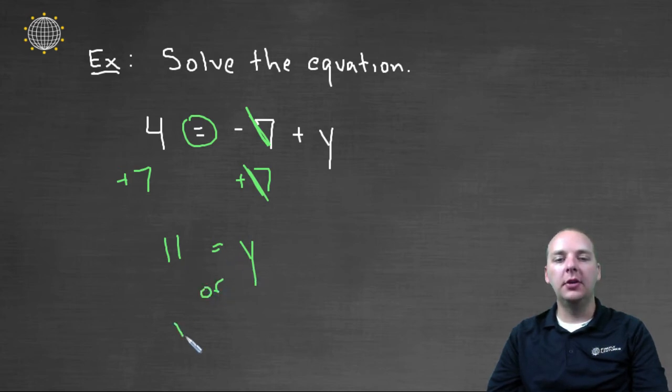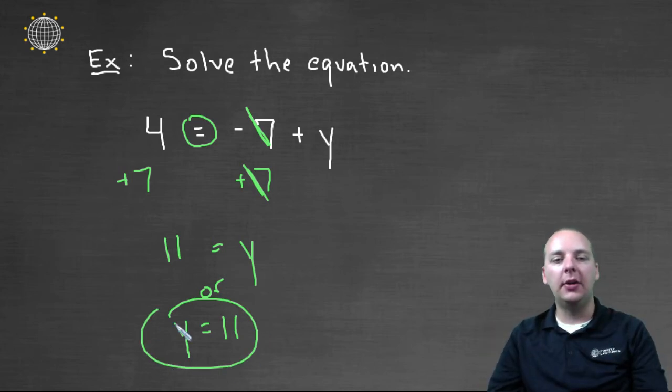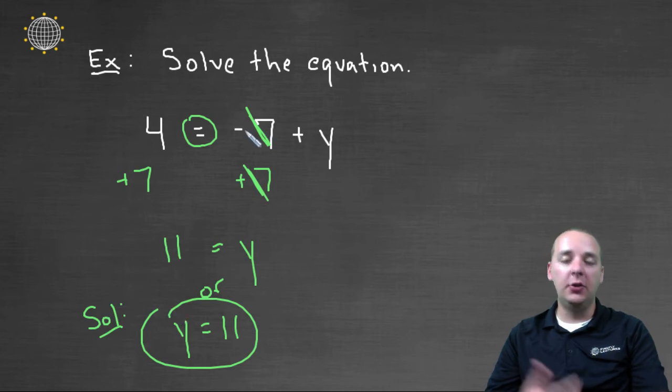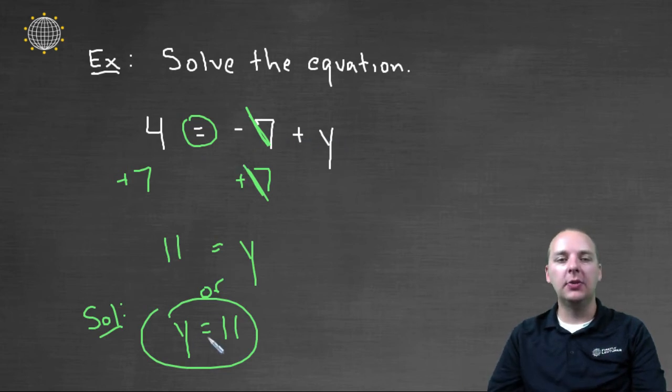eleven equals y, or obviously you could say y equals eleven. The order in which you write the sides doesn't matter. So there's our solution to this equation. And you can check your answer by replacing y with eleven. Negative seven plus eleven is in fact four. So that is the right answer.